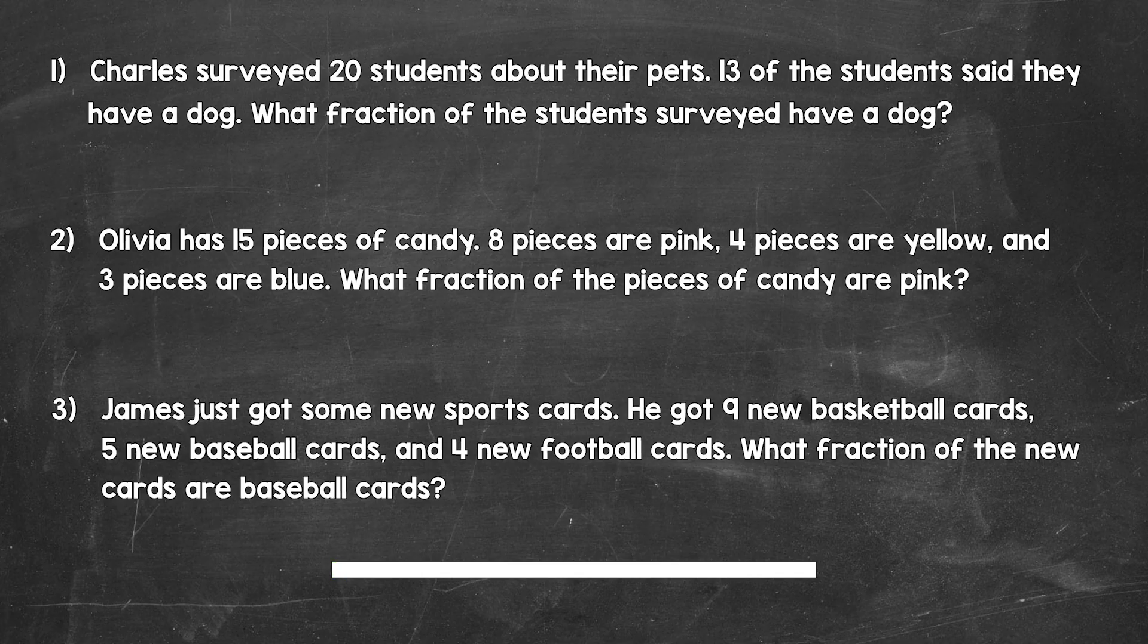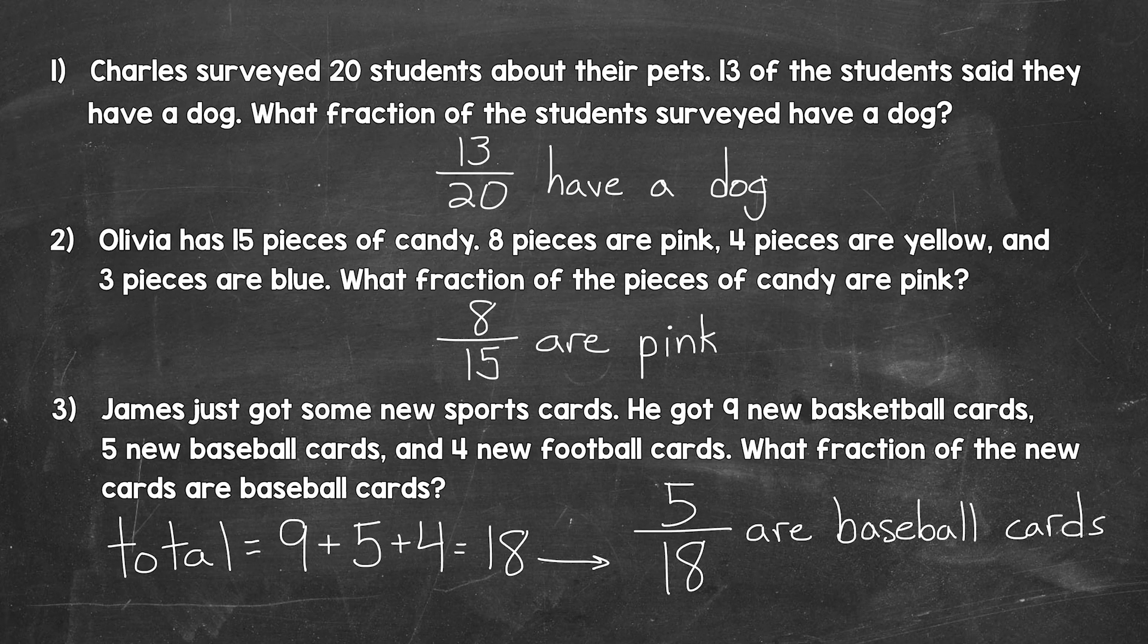Okay, so that's two minutes. Let's take a look at the answers. For number one, we have 13 20ths have a dog. 13 out of the 20 students surveyed have a dog. For number two, we have 8 15ths are pink. 8 pieces are pink out of the 15 in total. And lastly, for number three, we have 5 18ths are baseball cards. We needed to do 9 plus 5 plus 4 to get the total, 18. And five out of those 18 are baseball cards. So there you have it. Those were some word problems to help our understanding of fractions.